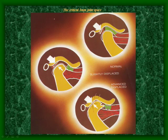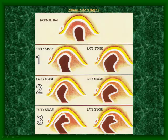Therefore, it is critical to maintain the 3mm joint space. Normal TMJ has a wide space between both the lower and upper bone. In the early stages of the illness, the gap decreases, and without treatment, the condition becomes worse in the long term.